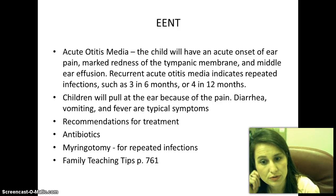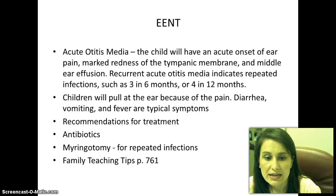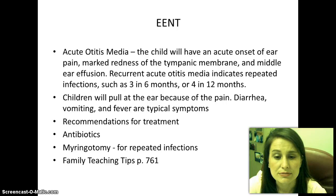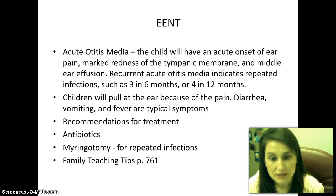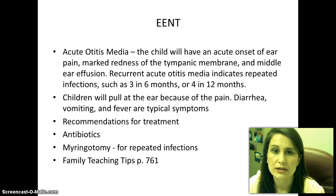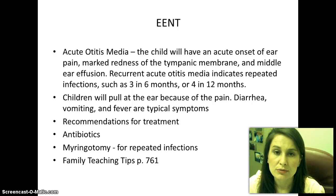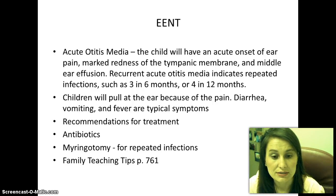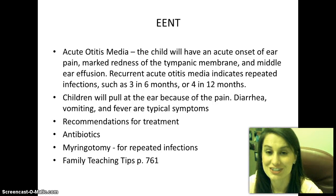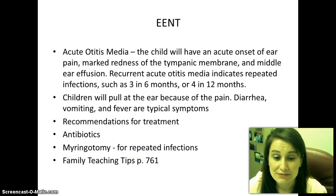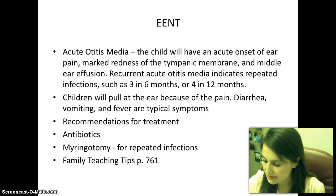A lot of times you'll see children pulling on their ear because of the pain. They might also have diarrhea, vomiting, and fever. On the first occurrence, we're going to try antibiotics to see if that clears it up. If they continue to have those infections — 3 in 6 months or 4 in 12 months — they will look at placing tubes in the ear, which is called a myringotomy for those repeated infections. You can find some family teaching tips on page 761.